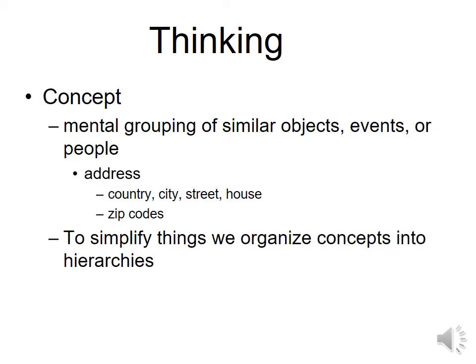The first thing we're going to address is the idea of a concept — a mental grouping of similar objects, events, and people. Why is an address a good example of a concept? When you say the word 'address,' several things have to come together: the country, the city, the street, the house number, and the zip code. All of those things are simplified into one concept called an address.